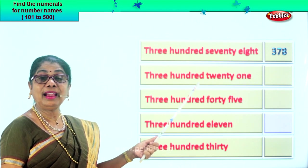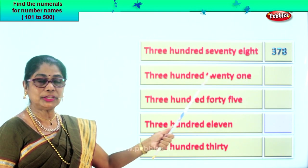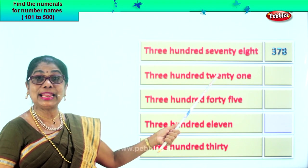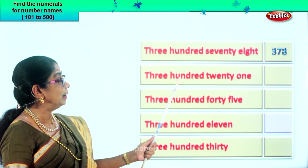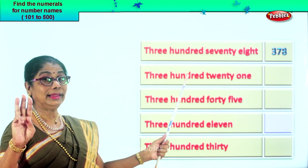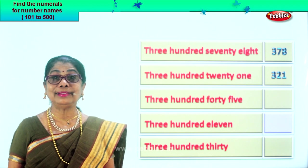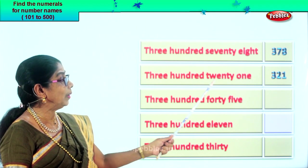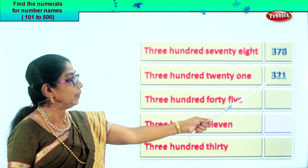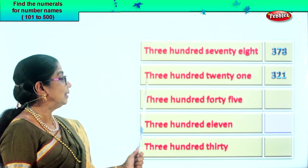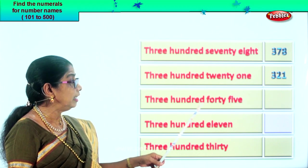Next. Three hundred twenty-one. Three in the hundredth place, two in the tens place, one in the ones place. Three hundred twenty-one. Read it again: three hundred twenty-one.